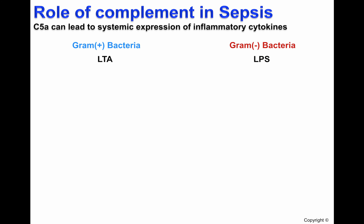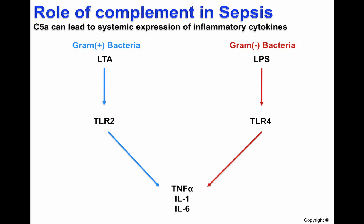Gram-positive and gram-negative bacteria have different cell wall components. Gram-positive bacteria have cell walls made primarily of LTA, or lipoteichoic acid, while gram-negative bacteria have cell walls made primarily of LPS, or lipopolysaccharide. LTA and LPS are both considered PAMPs. Macrophages utilize different toll-like receptors to recognize these cell wall components, with TLR2 recognizing LTA and TLR4 recognizing LPS. These TLRs are both considered PRRs. When these components are recognized by macrophages, the macrophages become activated and release inflammatory cytokines such as TNF-alpha, IL-1, and IL-6. The systemic release of these cytokines results in sepsis.